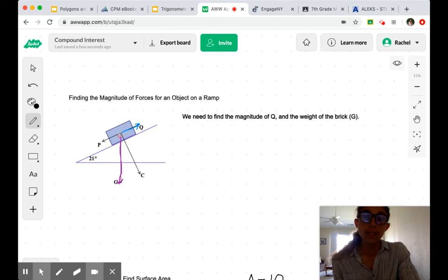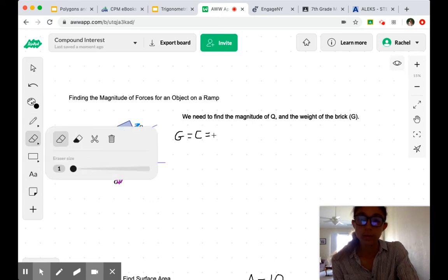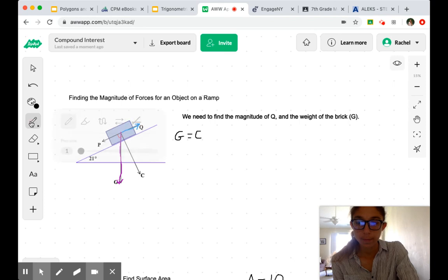And what we see here is that G is what we call the resultant vector of C and P. In other words, G equals C plus P.